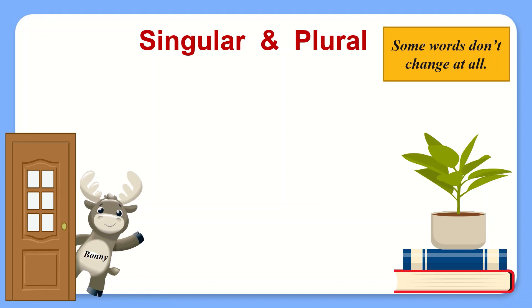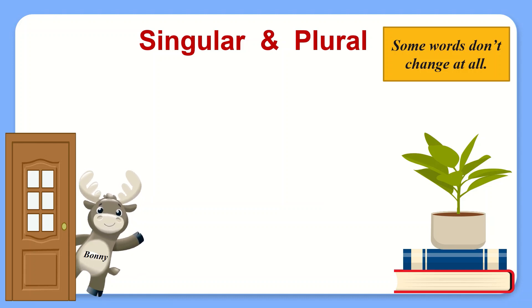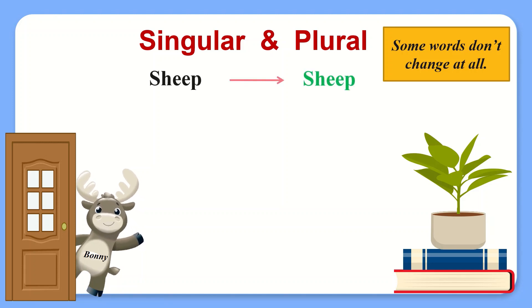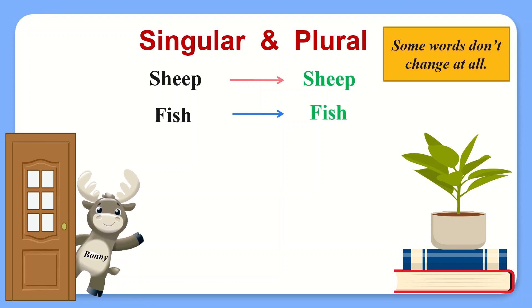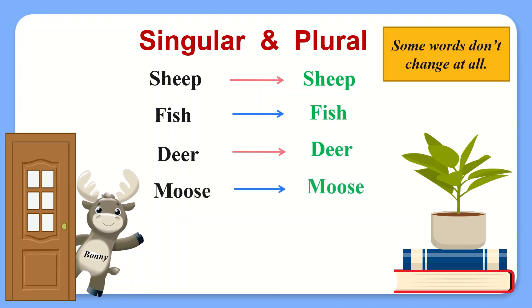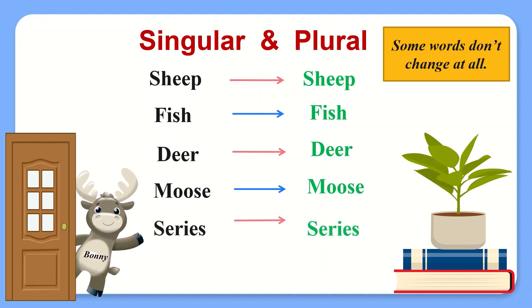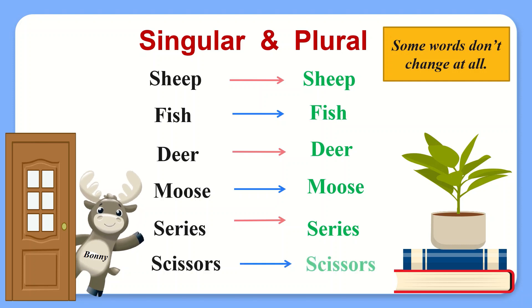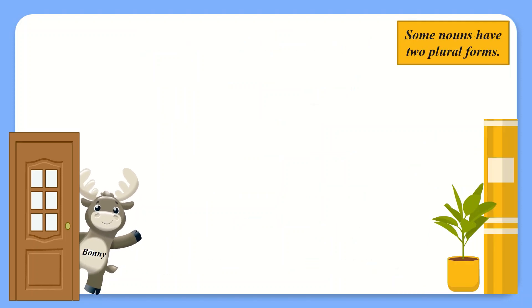Rule number four. Some words don't change at all. For example: sheep, fish, deer, moose, series, scissors.